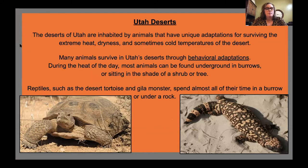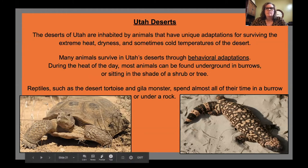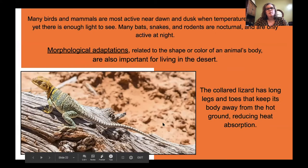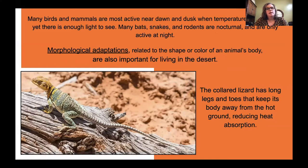The deserts of Utah are inhabited by animals that have unique adaptations for surviving in extreme heat, dry, and sometimes cold temperatures. Many animals survive through behavioral adaptations — during the heat of the day they can be found underground in burrows or sitting in the shade of a shrub or tree. Reptiles such as the desert tortoise and the Gila monster spend almost all of their time in a burrow under a rock. Many birds and mammals are most active near dawn and dusk when temperatures are coolest. Bats, snakes, and rodents are nocturnal and only active at night.